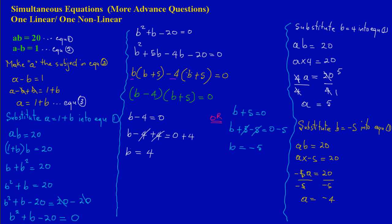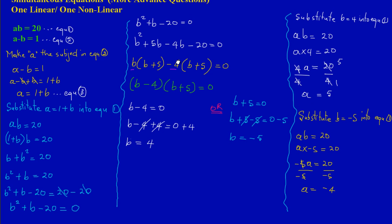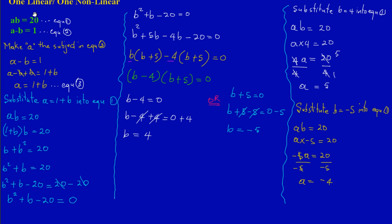So our final answers are: when a equals 5, B equals 4, and when a equals negative 4, B equals negative 5. It's really that easy. Remember, if you have any questions or comments feel free to post them, and you can rate the video if it has helped you. Ask your questions if you're in doubt and we'll get back to you.